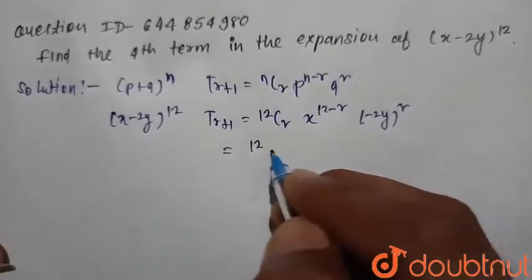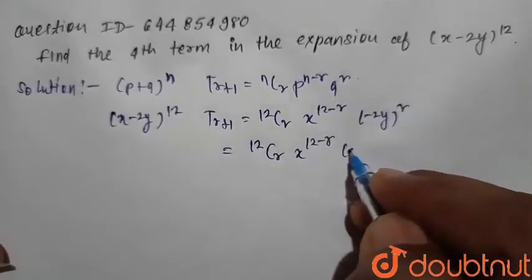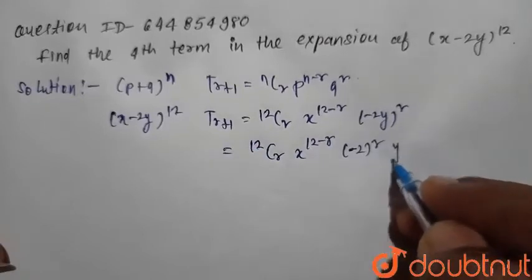On simplifying, we can write 12Cr × x^(12-r) × (-2)^r × y^r.